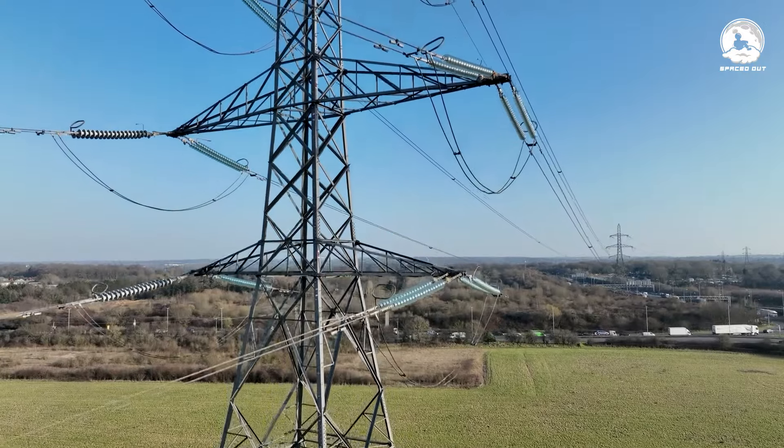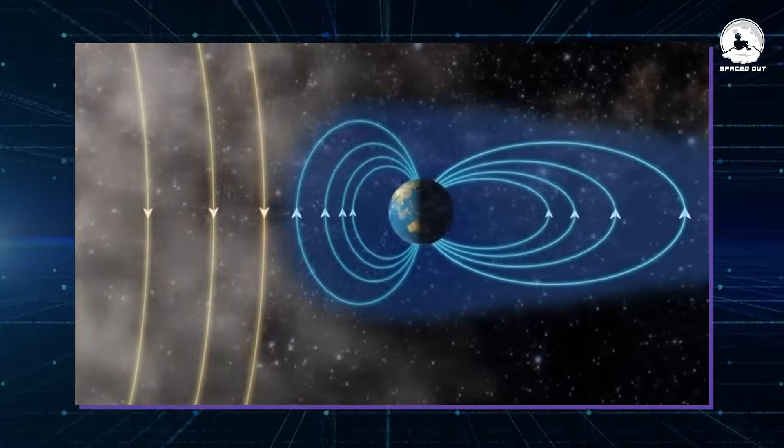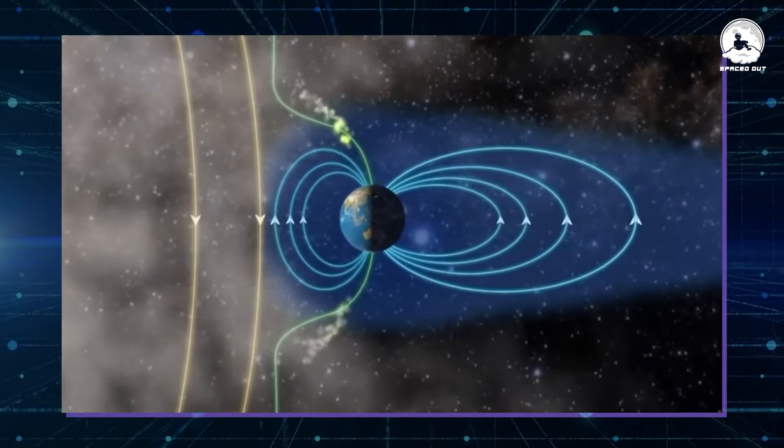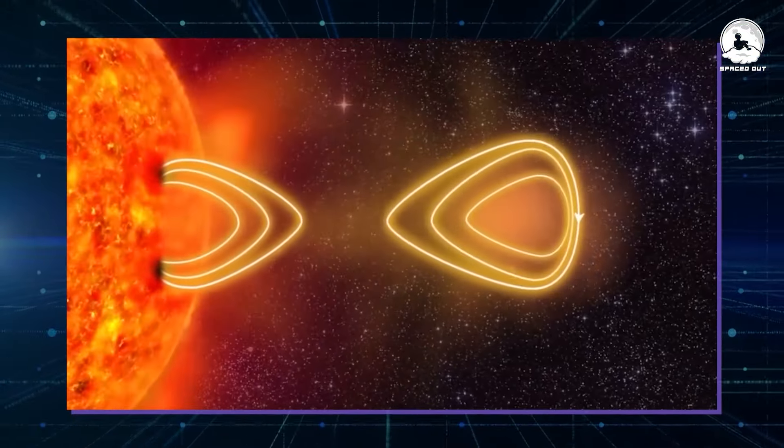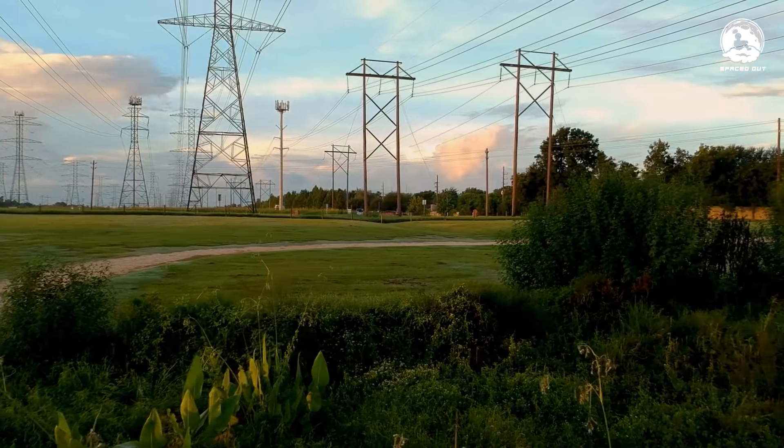These disruptions can extend to Earth-bound systems, particularly electrical grids. Earth's magnetic field shields against solar storms, but a weakened field could allow more charged particles to reach the atmosphere, causing disturbances in electrical systems and power grids.